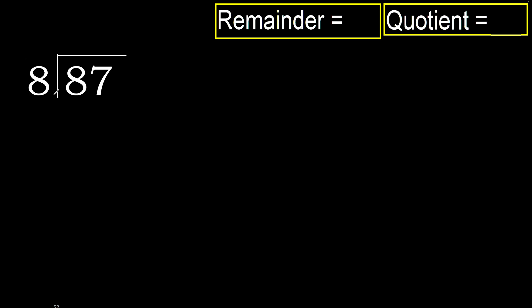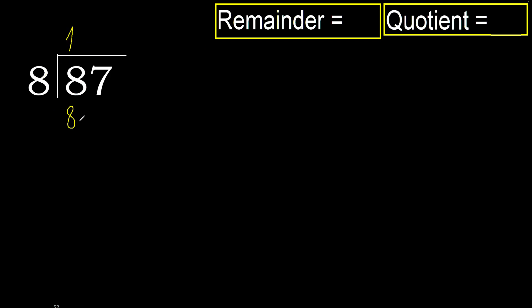87 divided by 8. 8 is not less, therefore work with 8. 8 multiplied by which number is nearest to 8 but not greater? 8 multiplied by 2 is 16 — 16 is greater. Multiplied by 1 is 8, which is not greater.